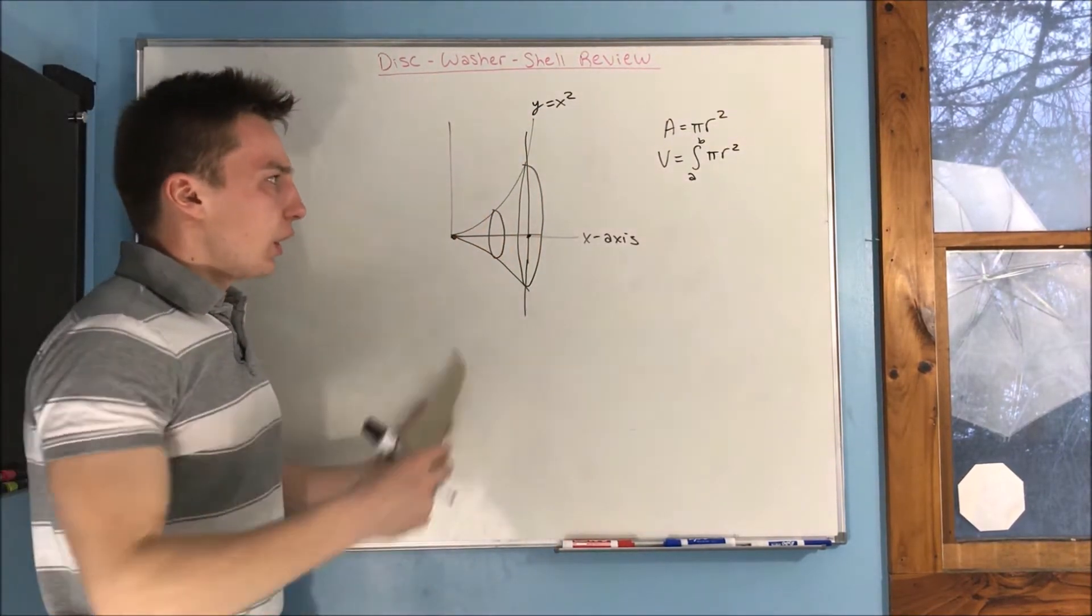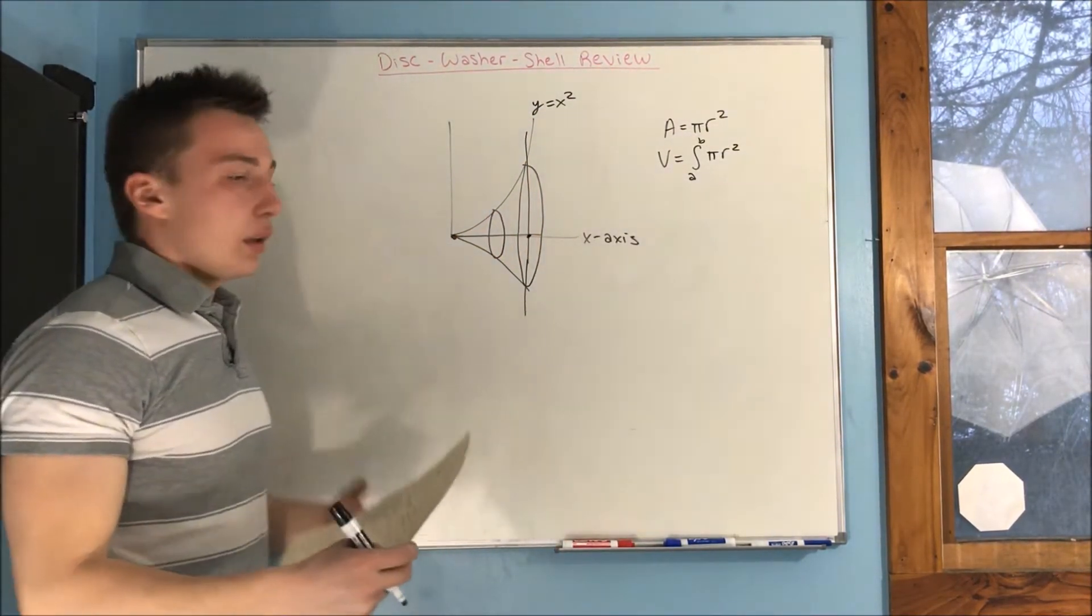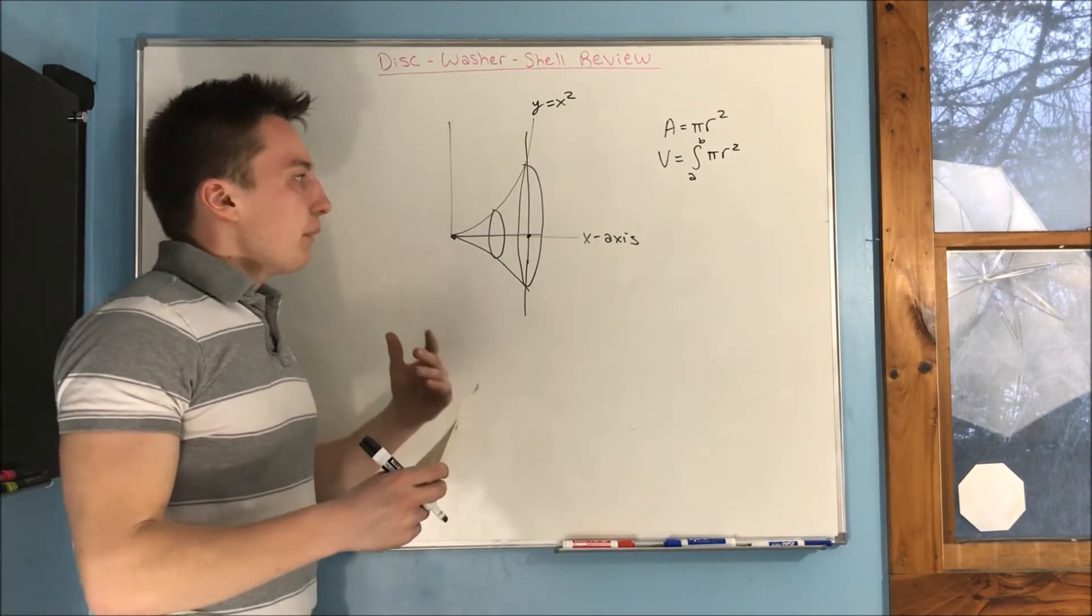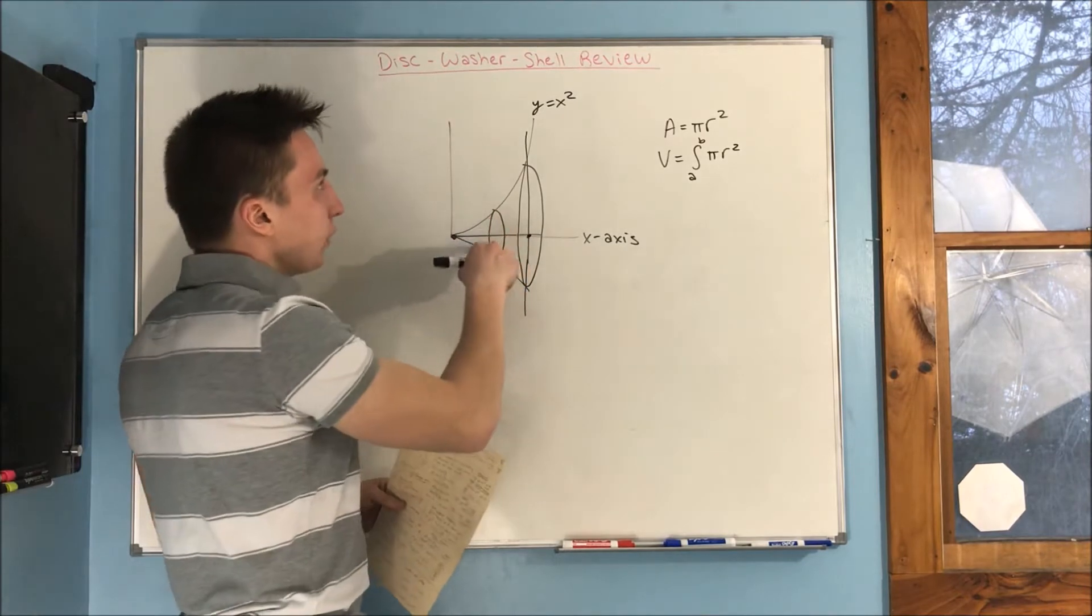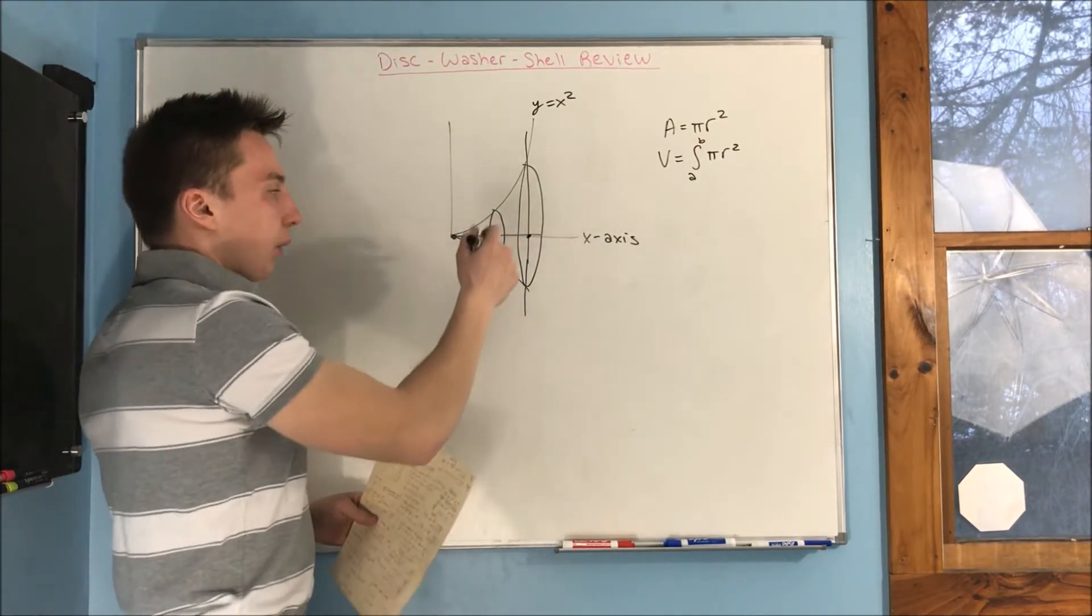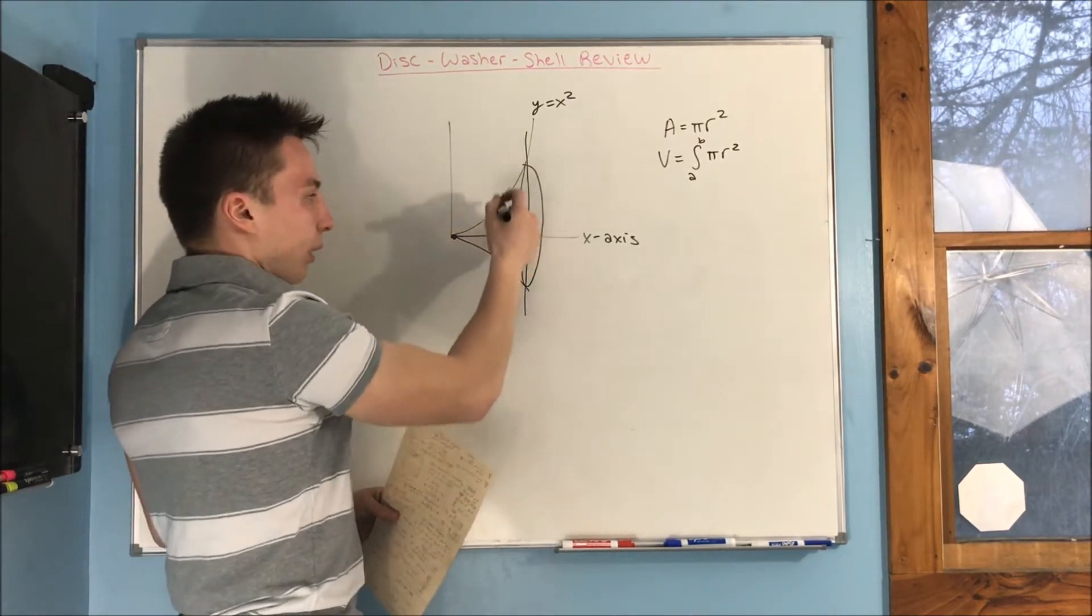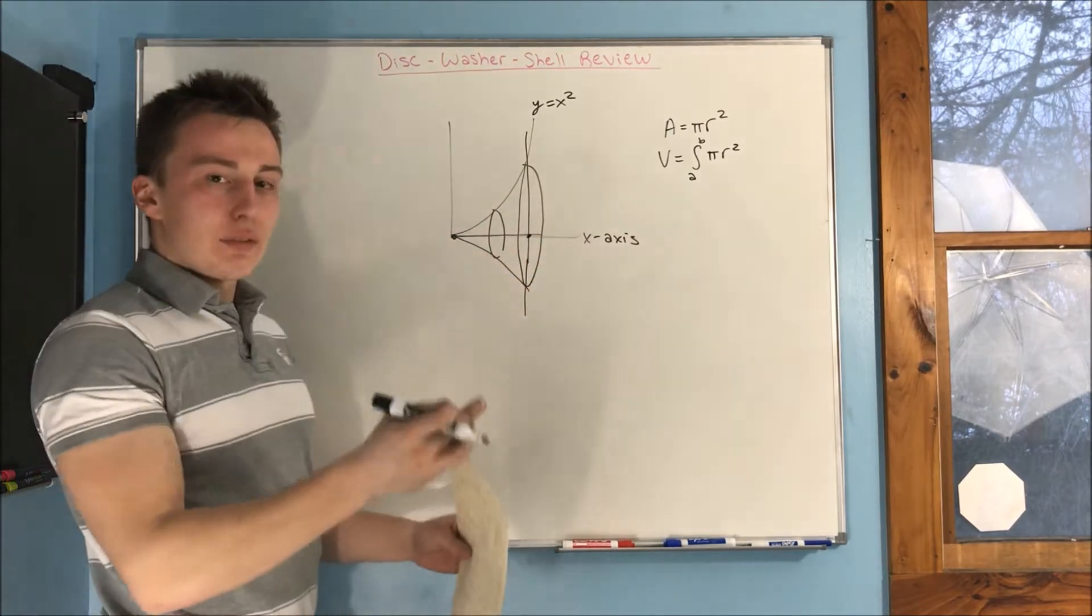So whatever that ends up being, then you've got your answer. Now, notice that when we use disk method, our cross-sections are perpendicular to the axis of rotation.